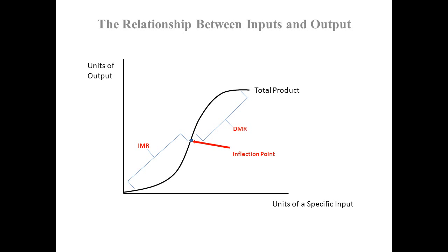Eventually, however, diminishing marginal returns will begin to set in — that's where we see the function rising at a decreasing rate. Generally in a production setting, if you start adding more and more workers, they might become less productive due to crowding. Imagine trying to produce output where it is so crowded that your arms are pinned to your side — an exaggerated example, but you can see how that would cause diminishing marginal returns to set in. Each additional unit of the input will result in less additional output.